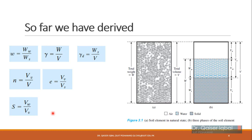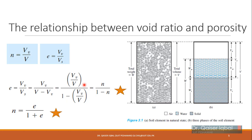Now we will derive relationships correlating these various properties. First, deriving the relationship between void ratio e and porosity n. Please refer to the phase diagram. Void ratio e = Vv/Vs. To eliminate Vs, we can write volume of soil solids as total volume V minus volume of voids Vv. Then we divide numerator and denominator by total volume V.